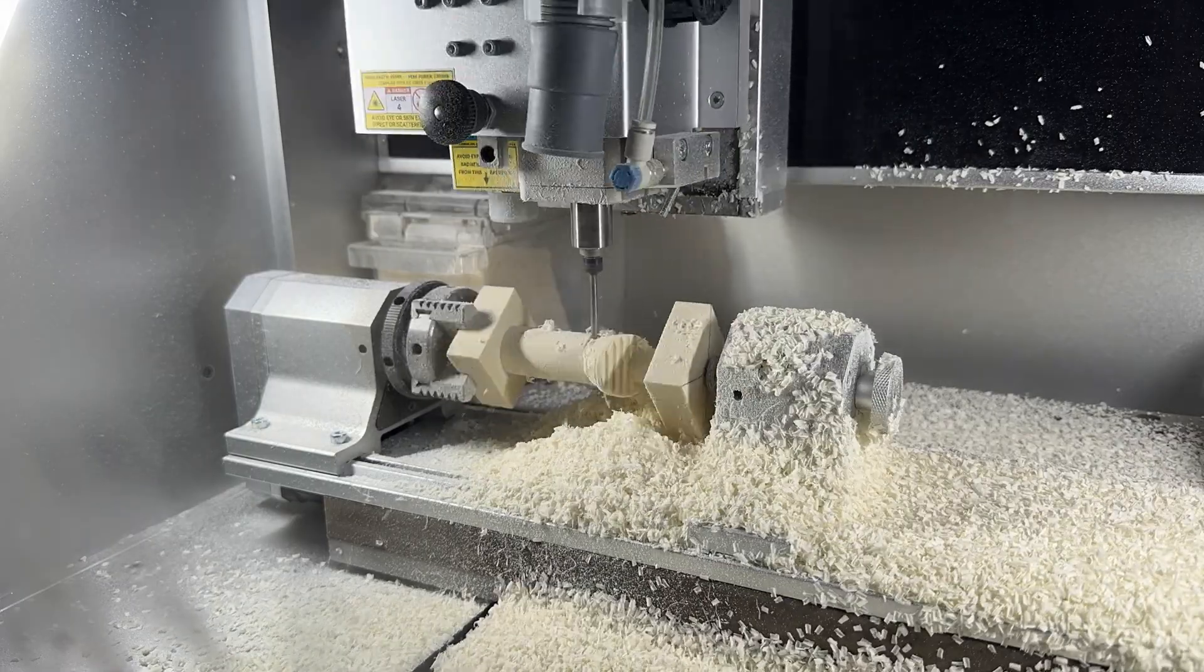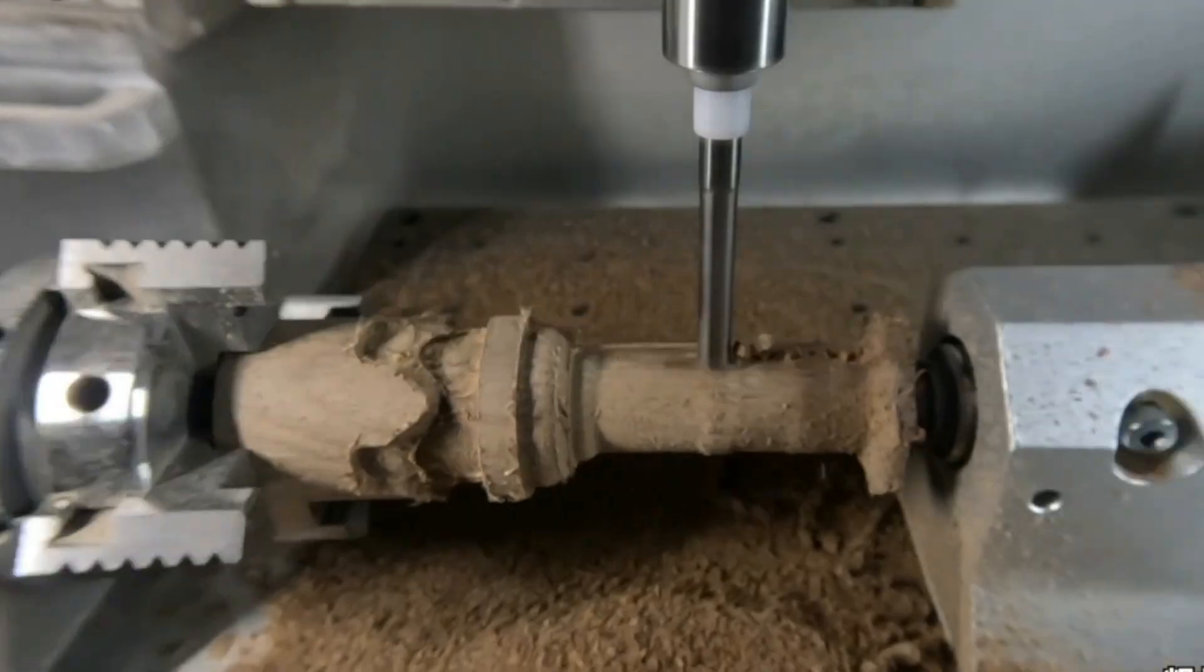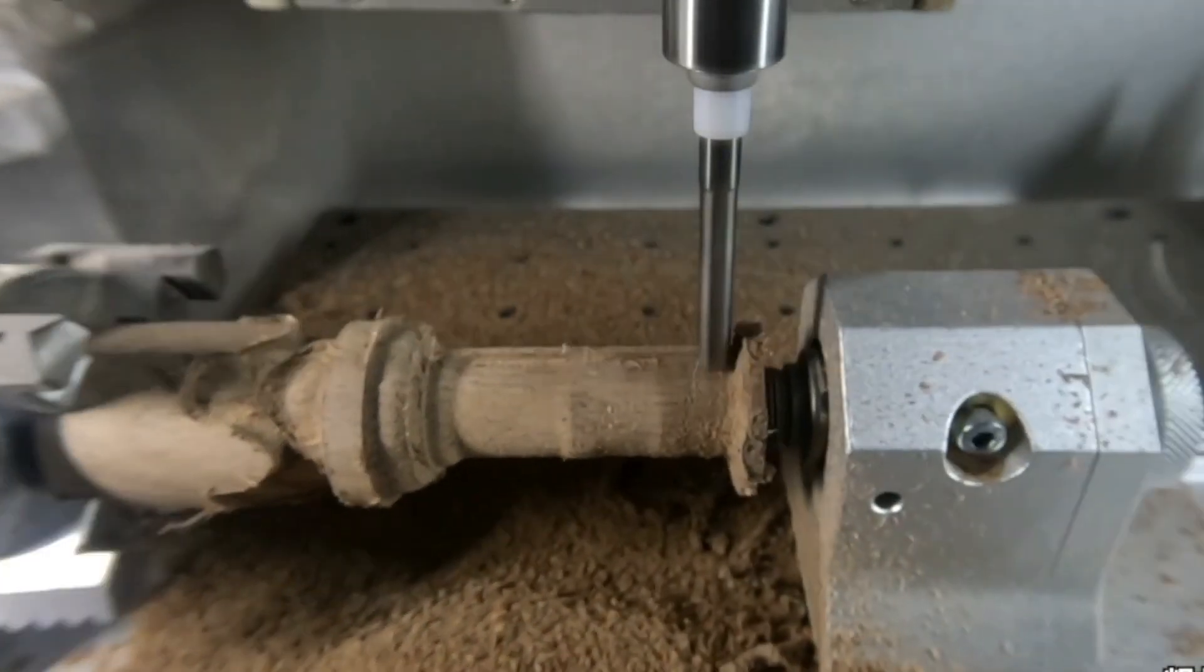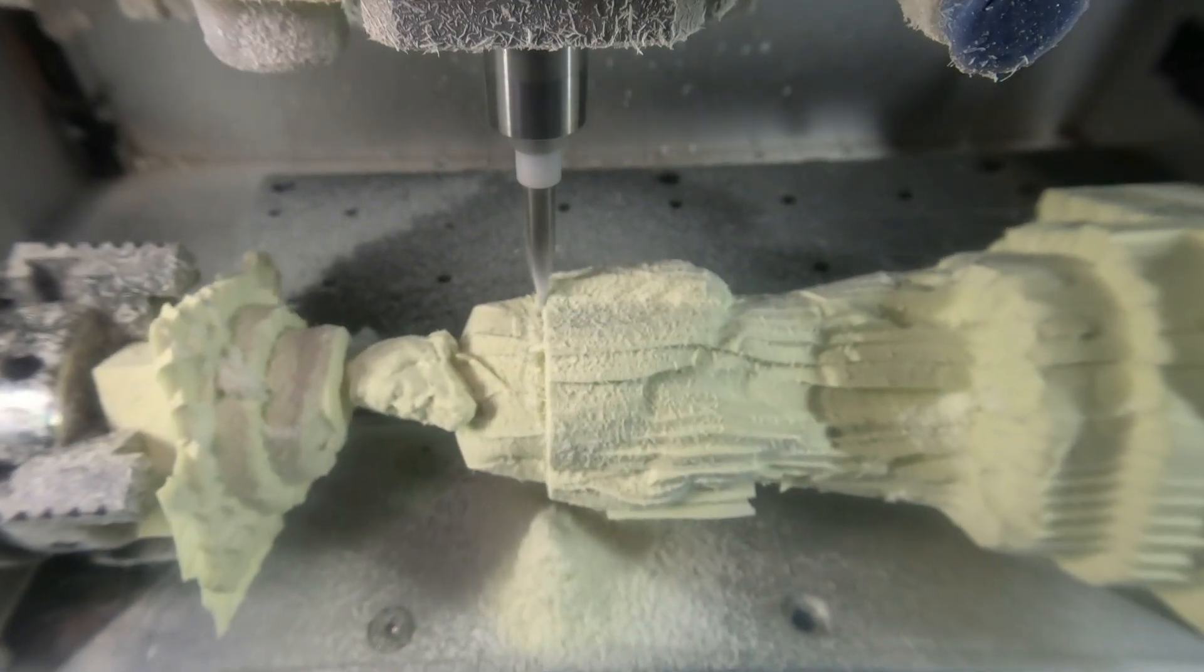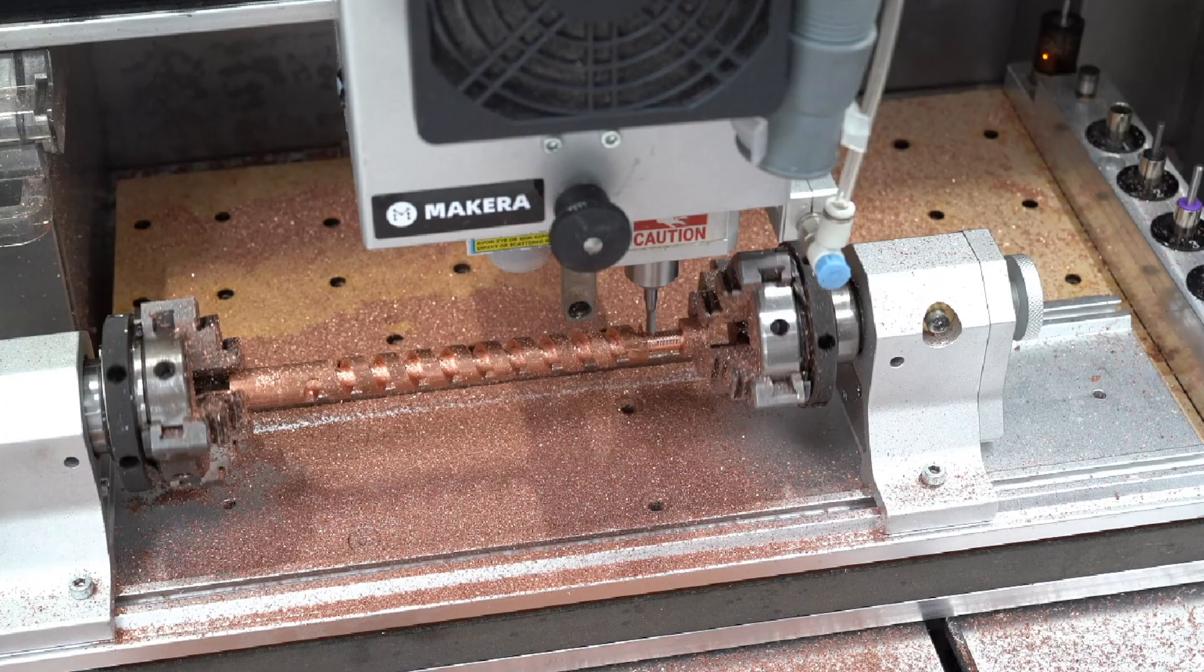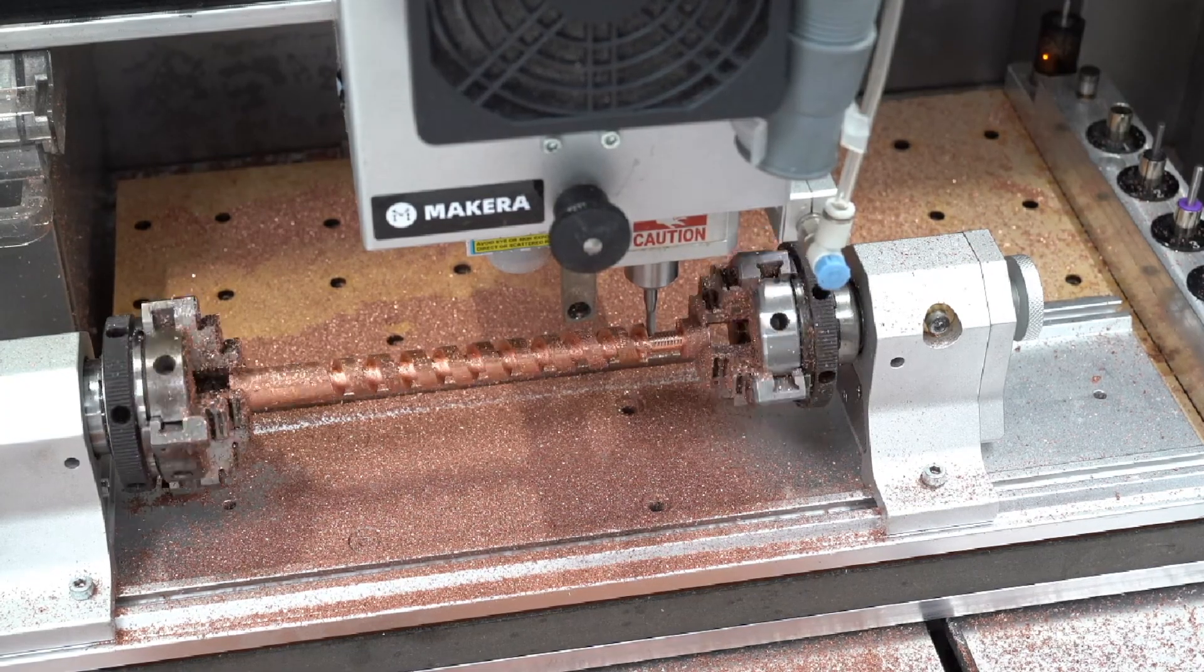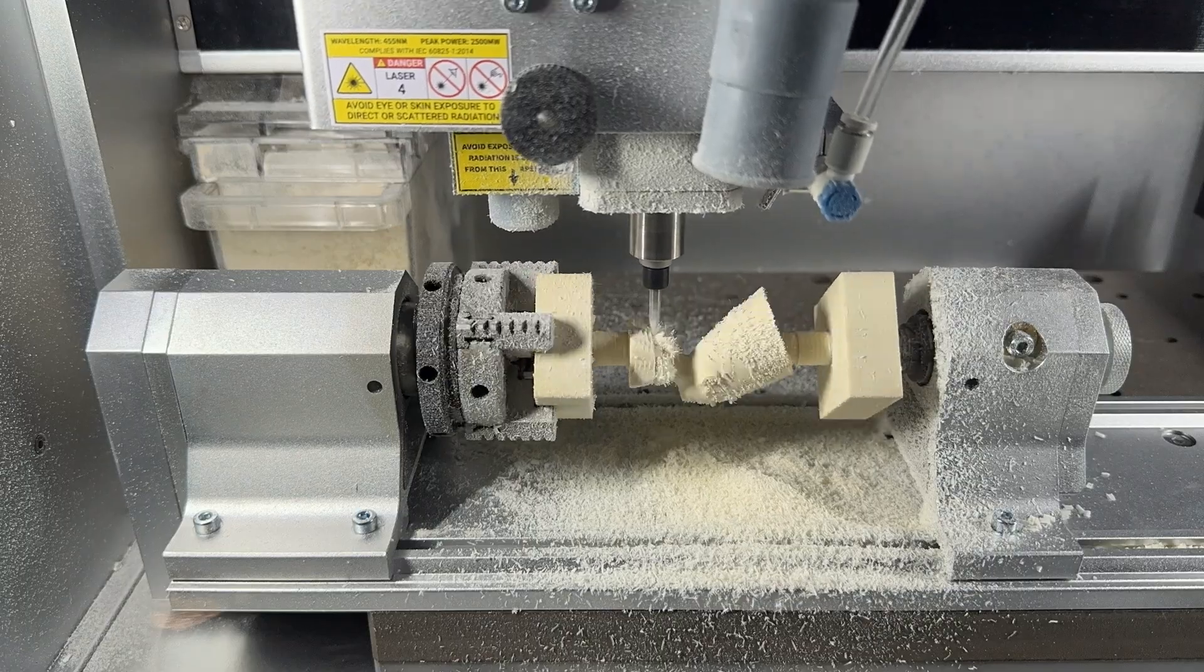The 4th axis module allows us to create parts using a 4th axis in addition to the typical features of our Carvera CNC. This opens up near limitless possibilities as we can create complex parts or intricate designs using a wide range of materials.